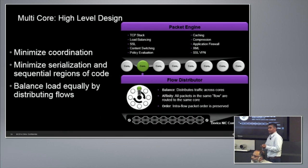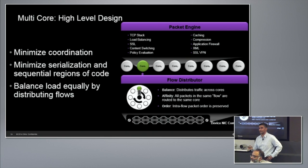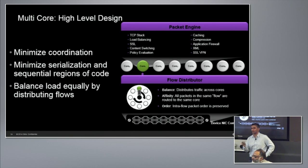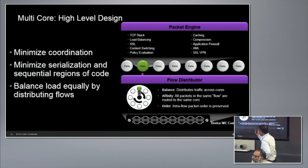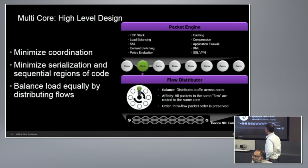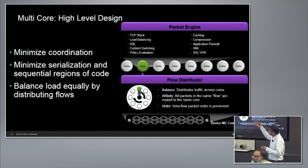We had a choice of building our own ASIC or using what's available in the industry. Most modern NICs support RSS, which can easily distribute flows across packet engines. We went with the software approach using RSS, and it's paid off big dividends. By ensuring flow affinity to one packet engine and following these three basic principles — minimize coordination, minimize serialization, balance load via RSS — we were able to scale packet engines almost linearly.